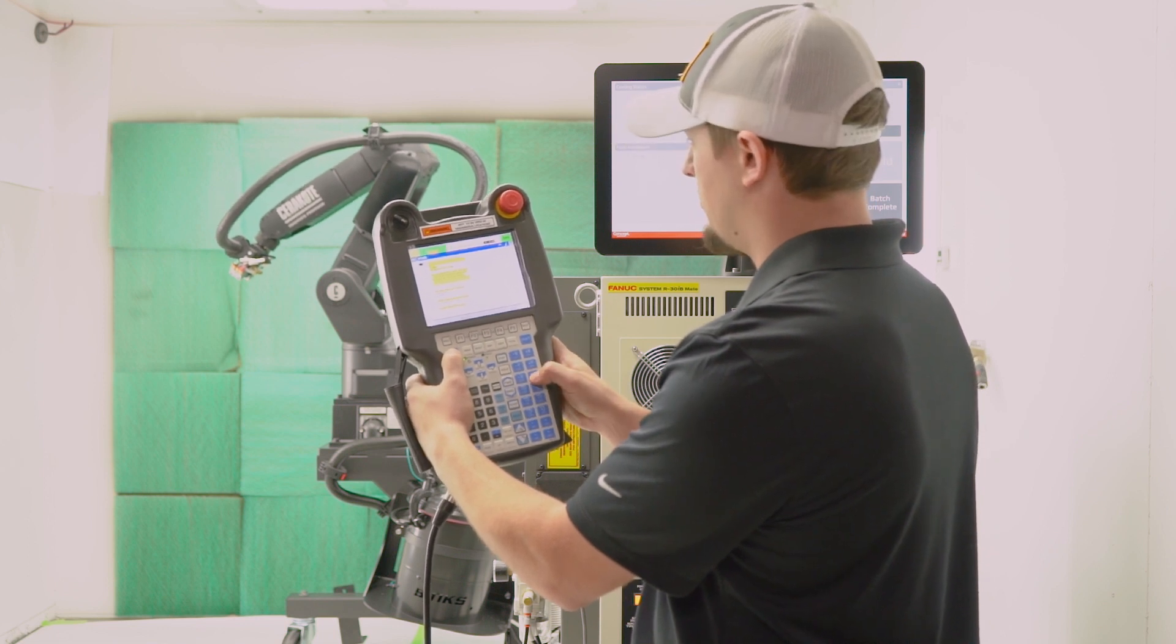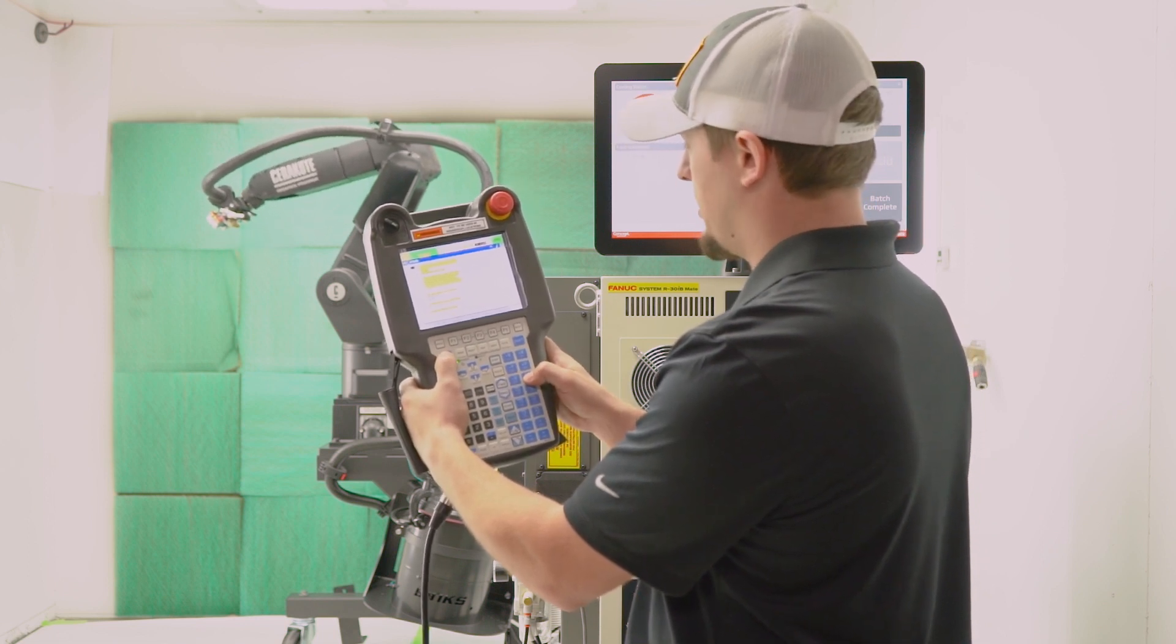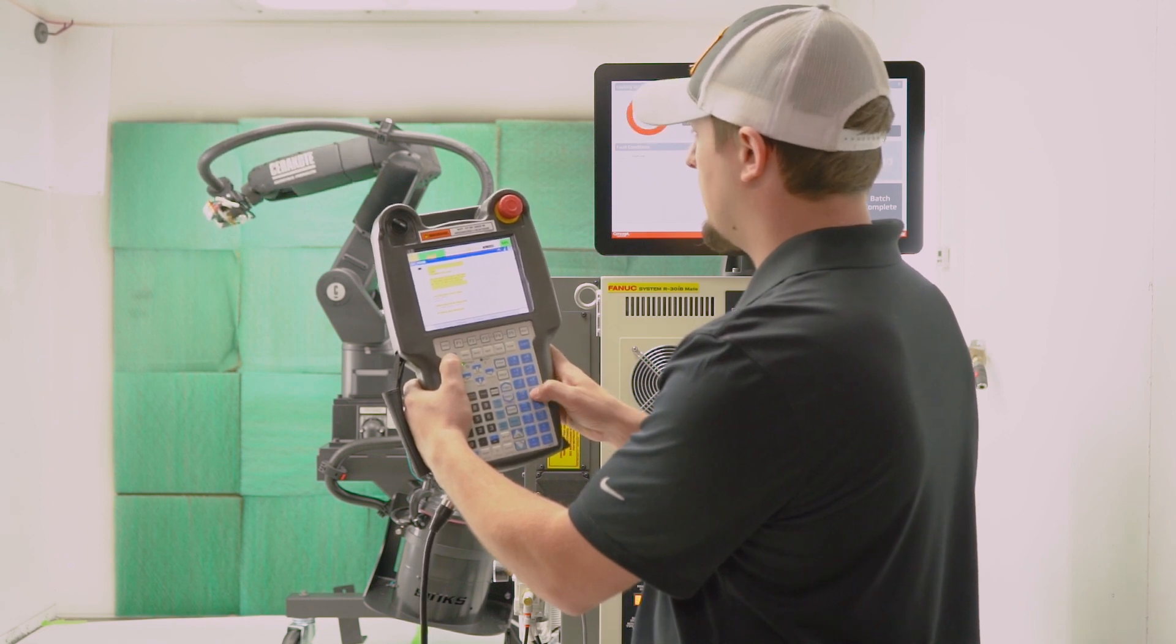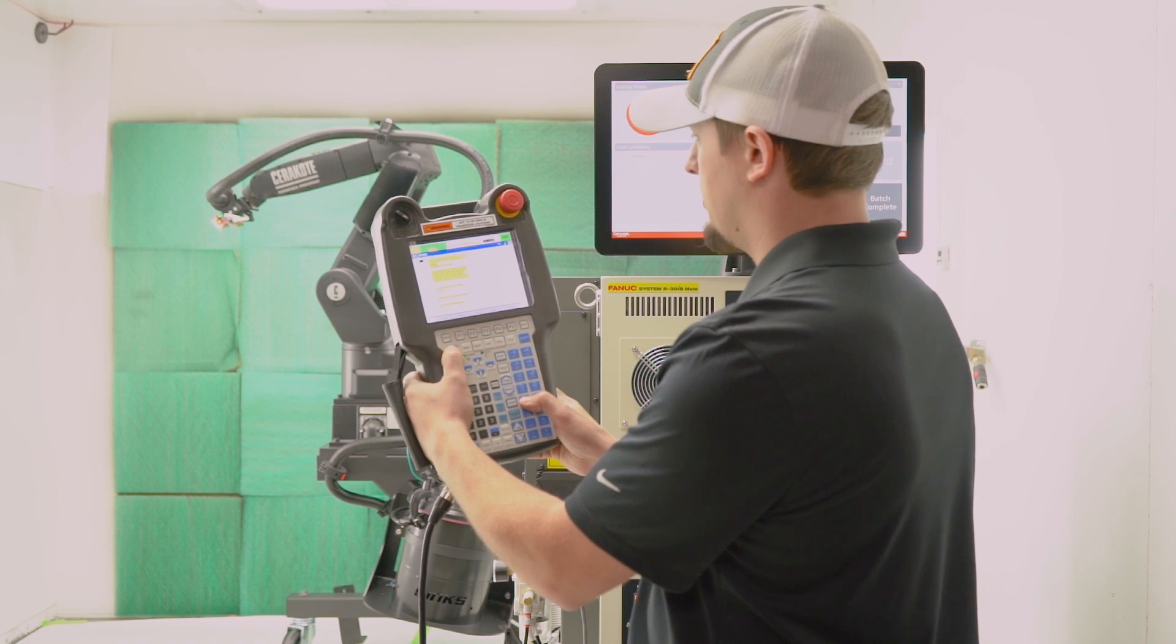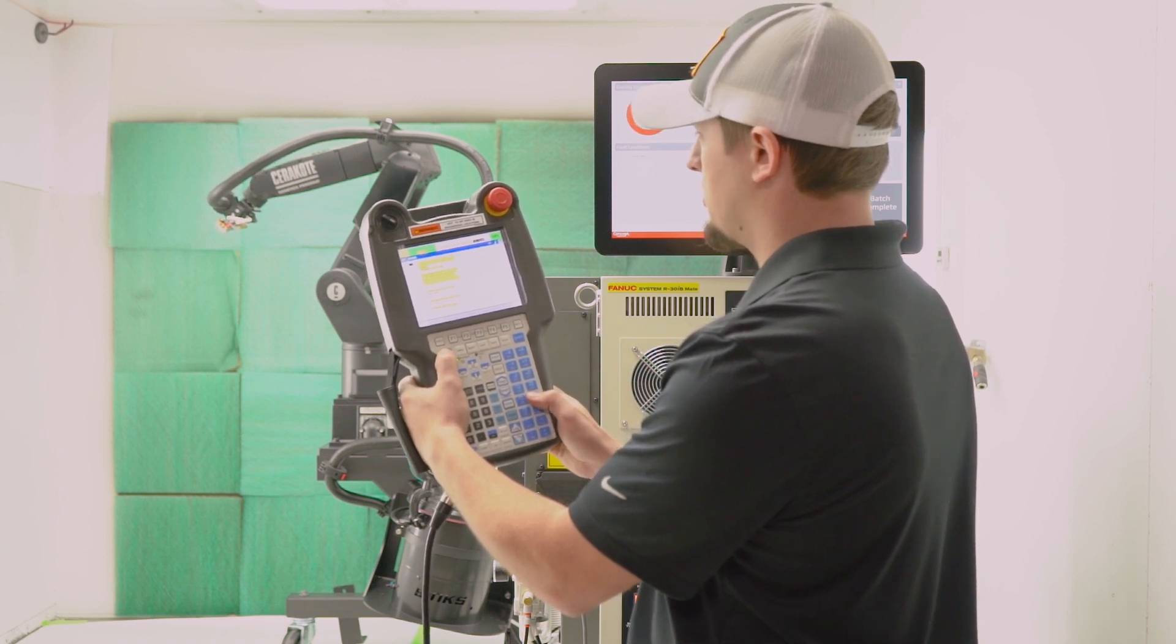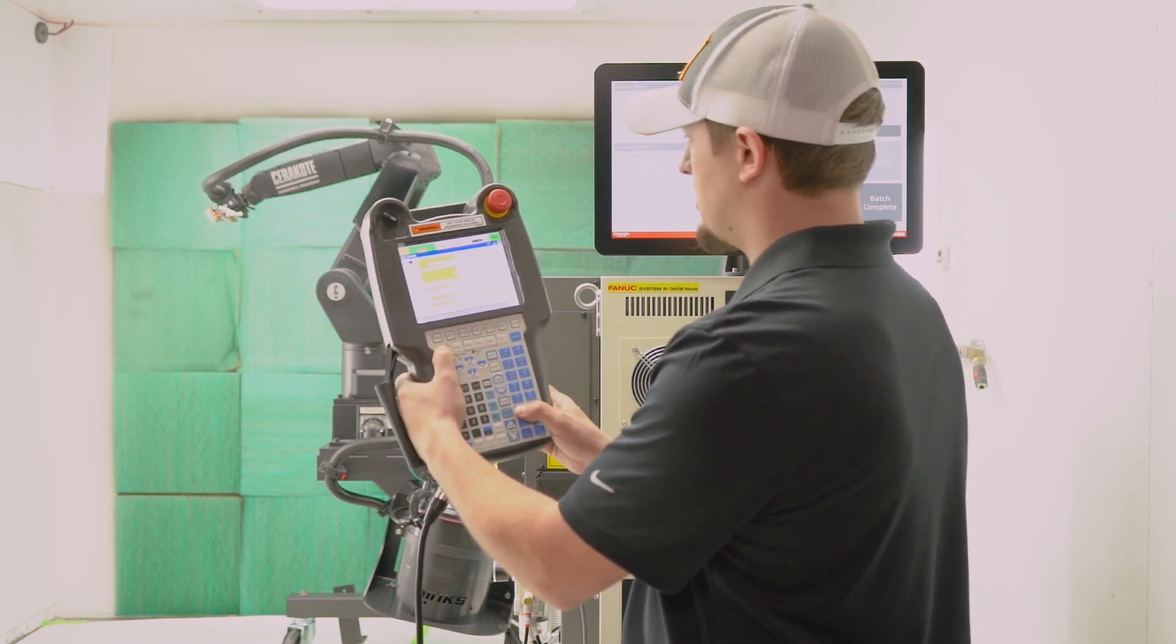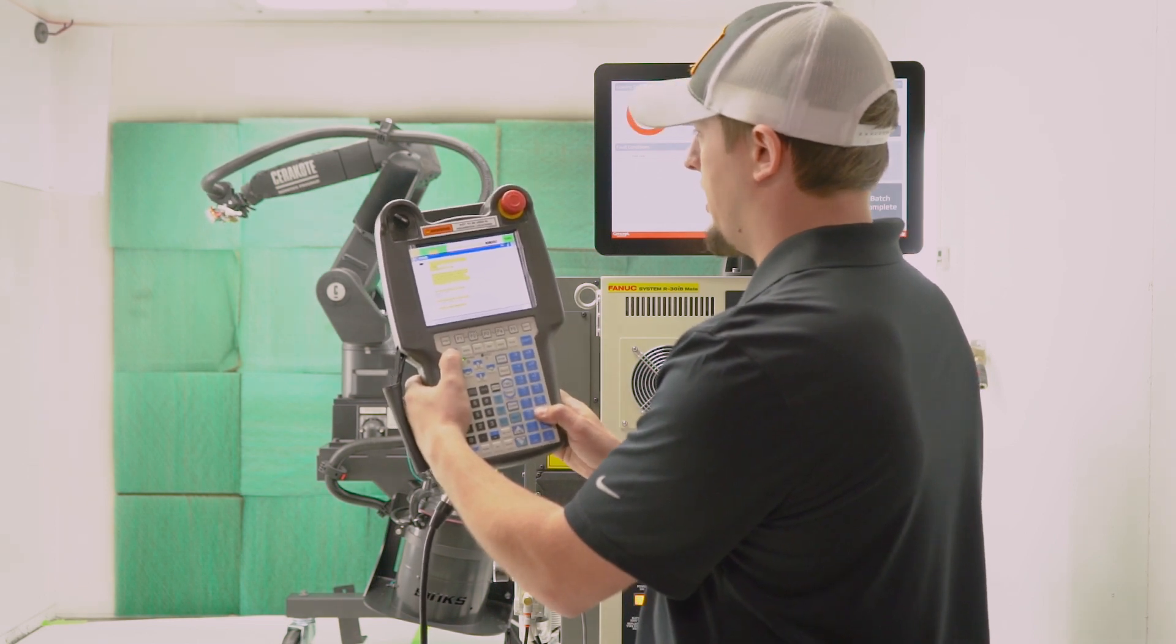Z negative is going to go down. Z positive is up. X negative is going to roll to the right. Positive is going to roll to the left. Y negative is going to go down, Y positive is going to go up. And then Z is the end of arm tooling, going to make it roll right or roll left.